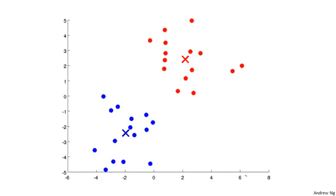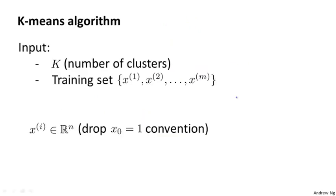Let's write out the k-means algorithm more formally. The k-means algorithm takes two inputs. One is a parameter k, which is the number of clusters you want to find in the data — we'll discuss how to choose k later. K-means also takes as input an unlabeled training set of just the x's. Because this is unsupervised learning, we don't have the labels y anymore. For k-means, I'm going to use the convention that x_i is an R^n dimensional vector, so my training examples are now n-dimensional rather than n+1 dimensional vectors.